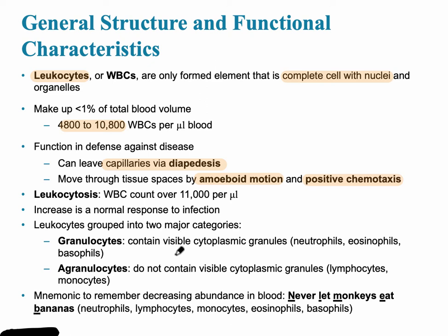When learning the different types of leukocytes, there are two categories. There are ones that have grainy cytoplasmic granules — those are called neutrophils, eosinophils, and basophils — and there are also ones that don't contain these granules, called agranulocytes. To remember the leukocytes from most abundant to least abundant, use the mnemonic: Never Let Monkeys Eat Bananas.